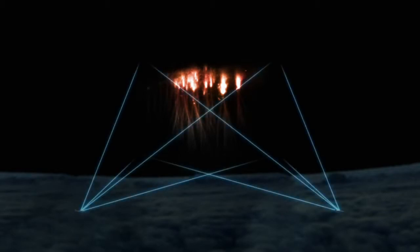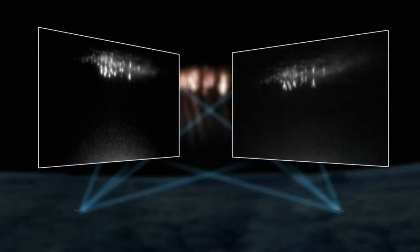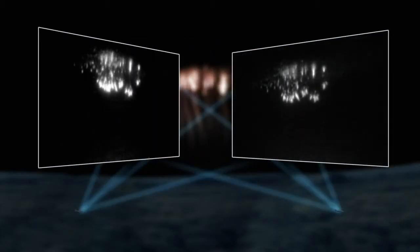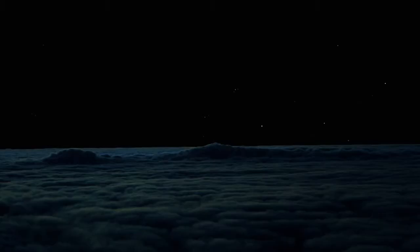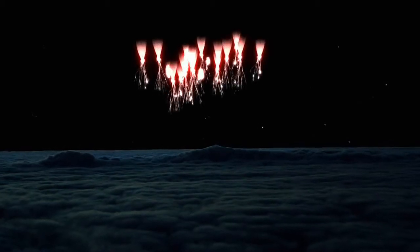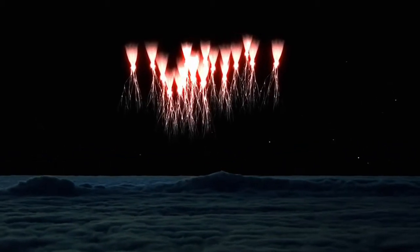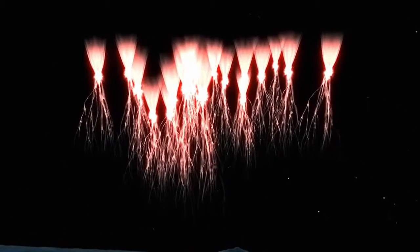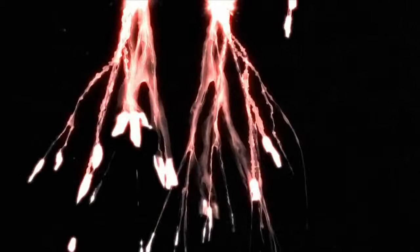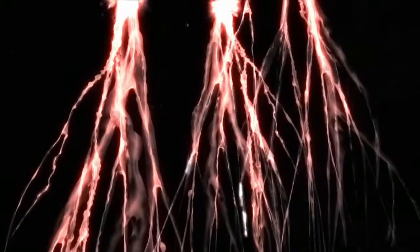By combining the images from the two cameras, the three-dimensional structure of the sprite becomes apparent. A large number of electrons collide with the atmosphere, creating brilliant bursts of light and opening channels where the electrons can flow.